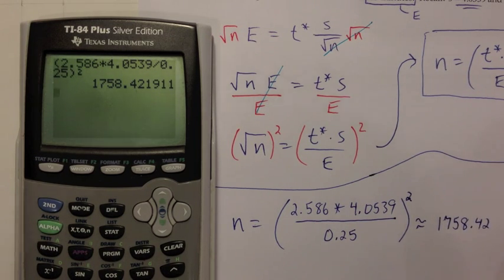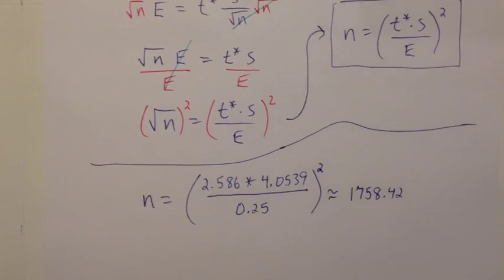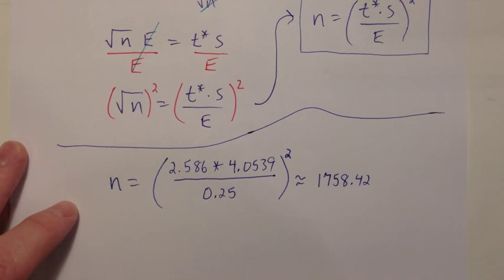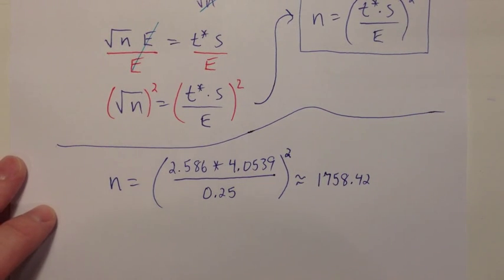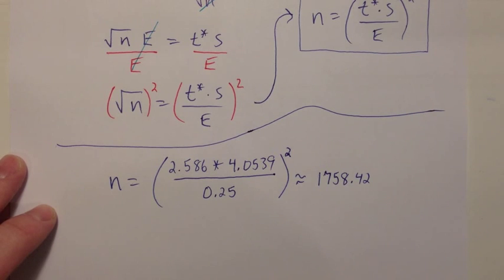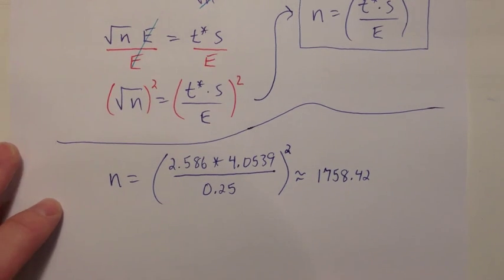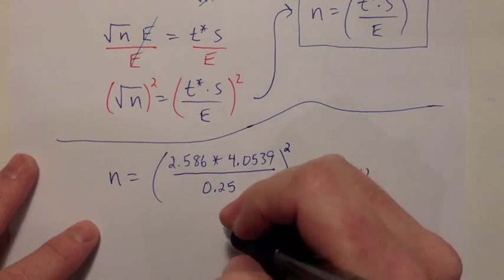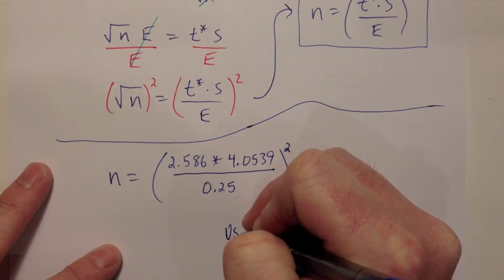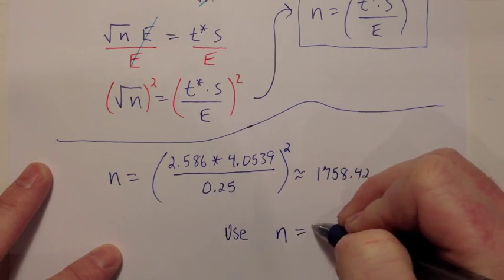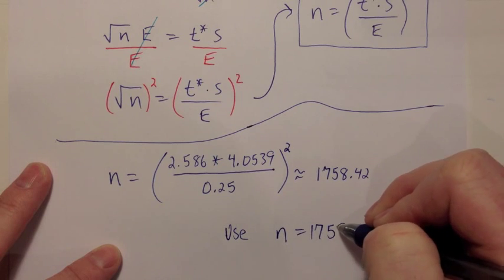If I was to round that to the nearest integer, that would be 1,758. But you might remember from the previous sections that when you're trying to figure out sample size, you would always rather have a sample size that's too big than a sample size that's too small. So we always round this up.